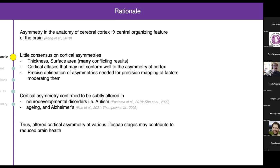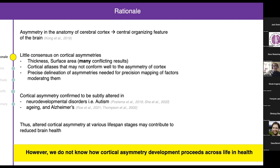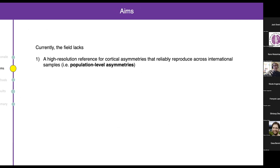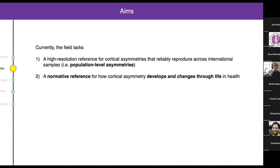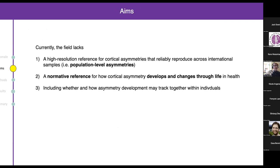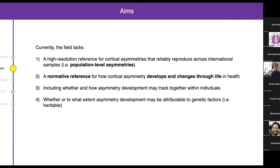In addition, cortical asymmetry has been confirmed to be subtly altered in neurodevelopmental disorders such as autism, but also in aging and Alzheimer's, suggesting that altered asymmetry at different lifespan stages may be important for brain health. However, we have no idea how cortical asymmetry develops across life in health because there is no normative reference for that. The field also lacks a high-resolution reference for cortical asymmetries that reliably reproduce across international samples — what we call population-level asymmetries.